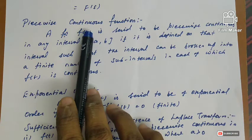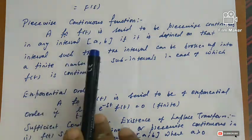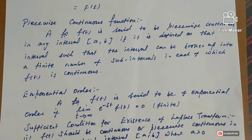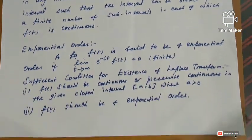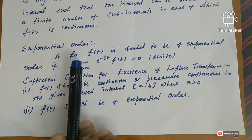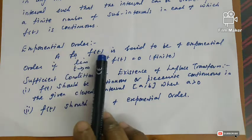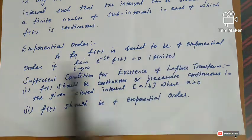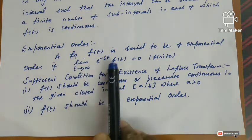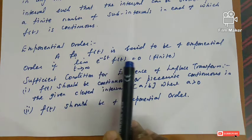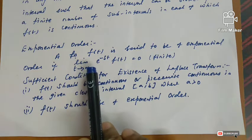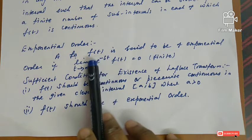A function f of t is said to be of exponential order if the limit as t tends to infinity of e power minus st times f of t is equal to zero or some finite value. Then we can say that the function is of exponential order.